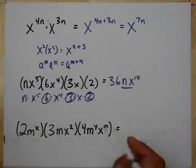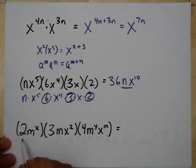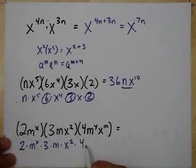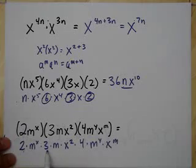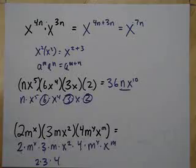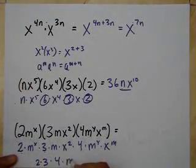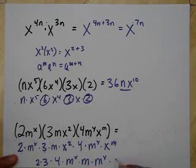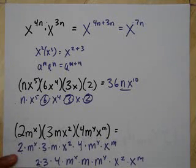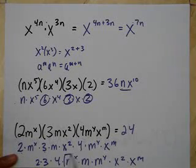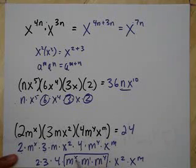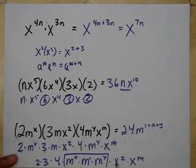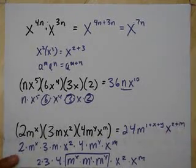Here's another confusing one. I'm going to rewrite these with the same bases next to each other. I write this as 2 times m to the x times 3 times m times x squared times 4 times m to the y times x to the m. Coefficients: 2 times 3 times 4 is 24. For the m's: m to the x times m times m to the y — I add the exponents since they have the same base — but x plus 1 plus y aren't like terms, so I write m to the 1 plus x plus y. For x's: x squared times x to the m — I add the exponents — giving x to the 2 plus m. Wow, that was tough!